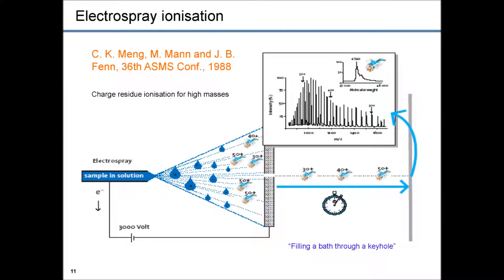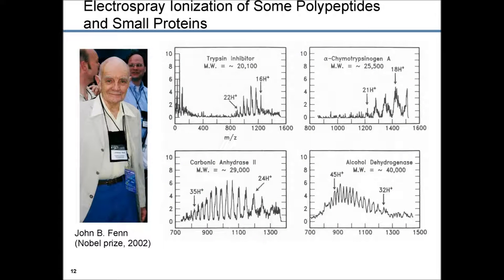For electrospray, this is one of the first spectra presented where it became clear that molecules in solution could be converted into ions. Interestingly, they are mostly multiply charged — this is a spectrum of a protein which could take up to tens of charges, usually protons, from the solution. Those protonated molecules could be transferred from atmosphere into vacuum and then detected. Those who didn't like this method called it 'filling a bath through a keyhole,' but nevertheless this method took off, and now the majority of proteomic experiments are done using electrospray. These are the first spectra as presented by John Fenn, who received the Nobel Prize in 2002 for this work, showing the charge state distribution which can be obtained with an electrospray source.